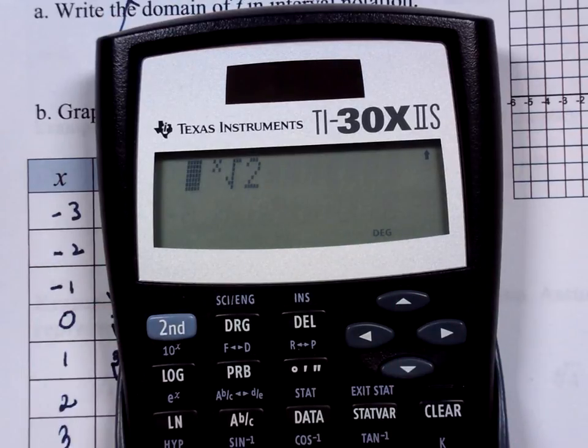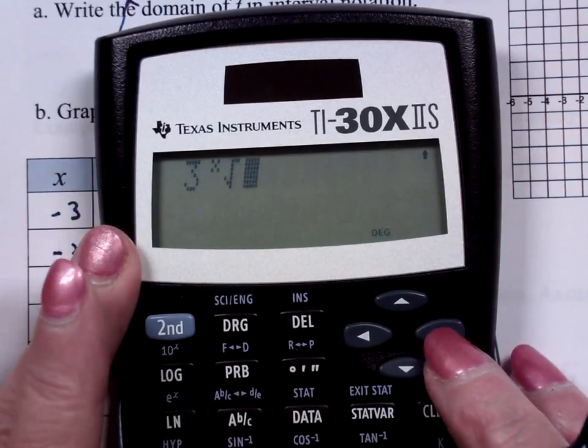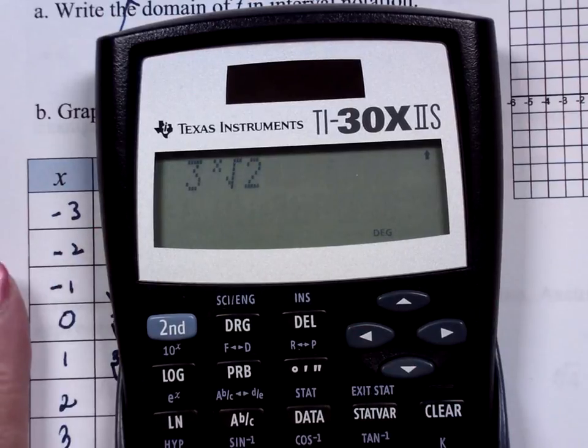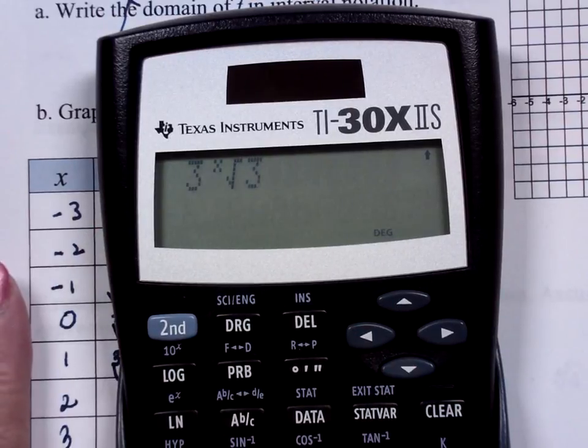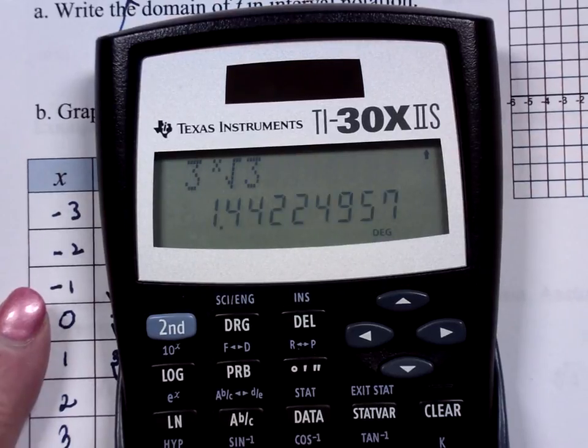Press the up arrow. Notice it came back. And now, all I have to do is to make that a, instead of a 2, I make it a 3. Cube root of 3 is 1.4.